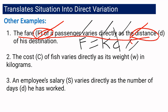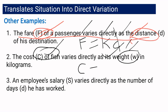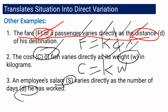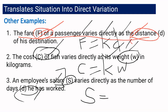For number two: the cost of fish varies directly as its weight in kilograms. It is indeed a direct variation because the price of fish depends on how many kilos you buy — the more kilos, the more you pay. Translated into an equation: c equals kw. For number three: an employee's salary varies directly as the number of days he has worked. Your salary depends on the number of days you work — the more days you work, the higher your salary. Translated into an equation: s equals kd.